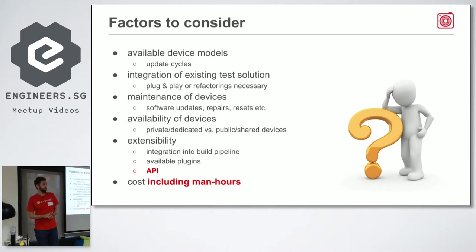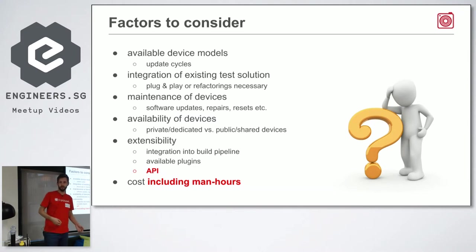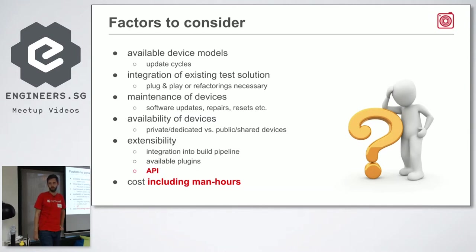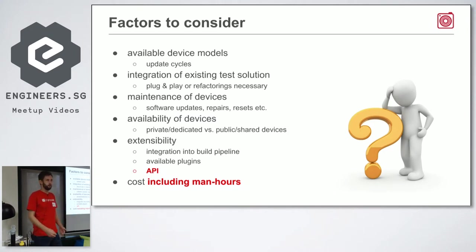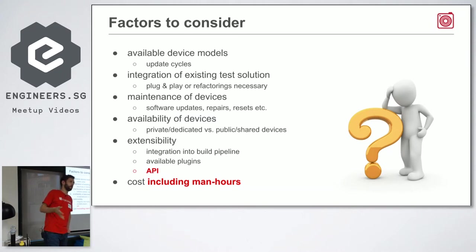We also want to run a subset of tests with every code change - to see if a pull request breaks anything important, like login or basic functionality such as listing an item on Carousel. So we take a subset of these 100 tests and run them with every code commit, roughly 50 a day. You need quite a few phones, stable enough to get feedback on time.